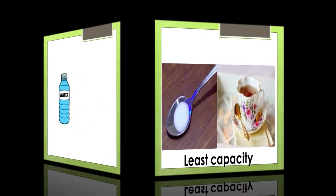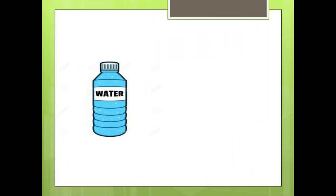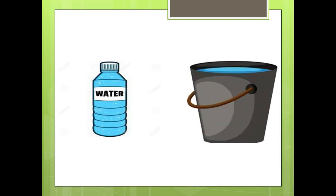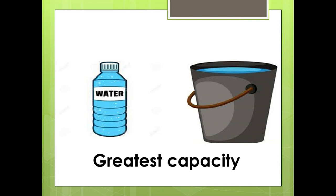In the same way, it is a water bottle. This can contain more amount of water. Similarly, this is a bucket and the bucket also can contain more amount of water. So, the object which can contain more things is called the greatest capacity object.